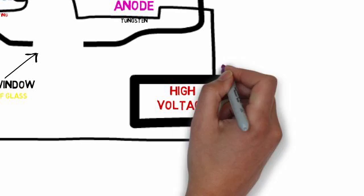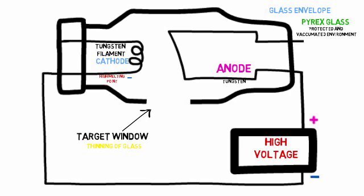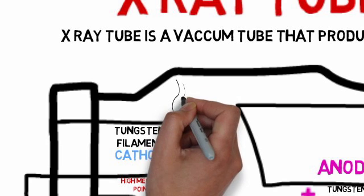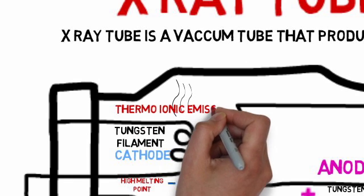Both of these are connected to high voltage output. The cathode is connected to the negative end and anode to the positive end. The cathode is heated and produces electrons through thermionic emission.